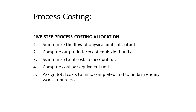Process Costing always requires preparing a production report that consists of three parts or five steps. First, summarize the flow of physical units of output. Second, compute the output in terms of equivalent units. Third, summarize the total cost to account for. Fourth, compute cost per equivalent unit. Fifth, assign cost to units completed and to units in ending work-in-process.